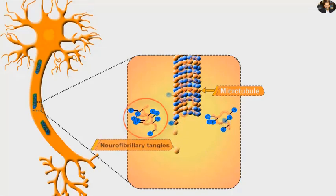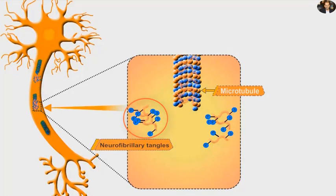The hyperphosphorylated tau protein aggregates to form new pathological structures called neurofibrillary tangles which distribute throughout the body's nerve cells.